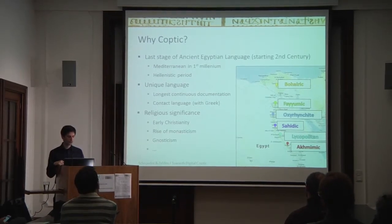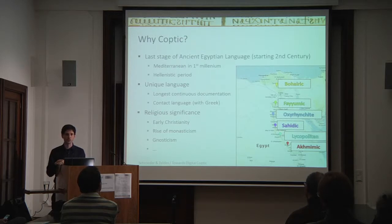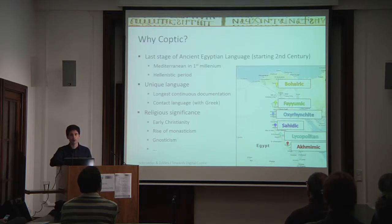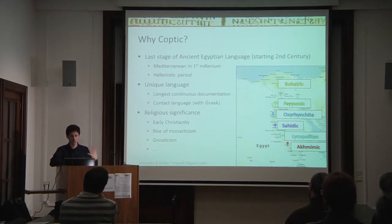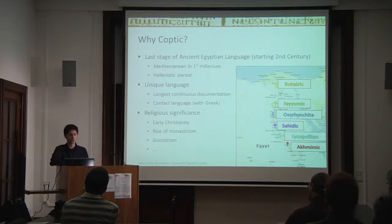For linguists, Coptic is very interesting. For historical linguistics, it happens to be the language with the longest continuous documentation of any language in the world. Together with the previous stages of Egyptian, Coptic and Egyptian together cover about four and a half millennia of human history — a pretty amazing time span if you're interested in what happens to languages over such extremely long periods. It's also very interesting for contact linguistics because it has been heavily influenced by Greek, amounting to much more than just borrowing vocabulary — you also have borrowing of grammatical structures, such as what Greek particles do in Coptic, or compound words incorporating Greek and Egyptian native elements.